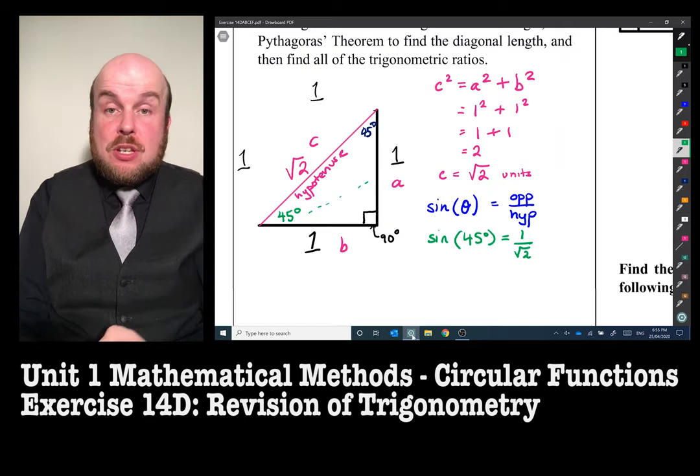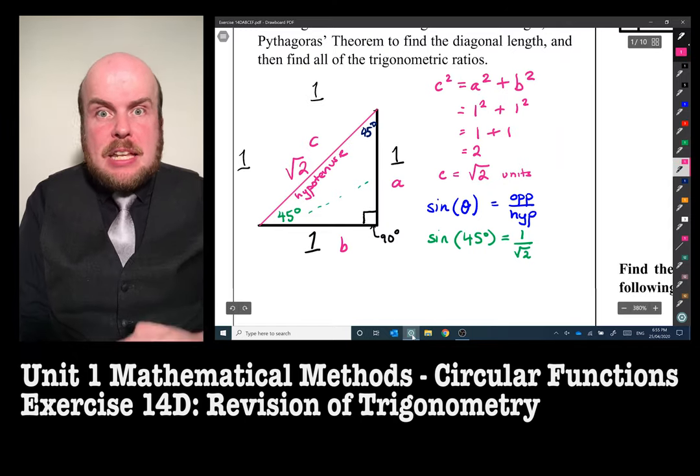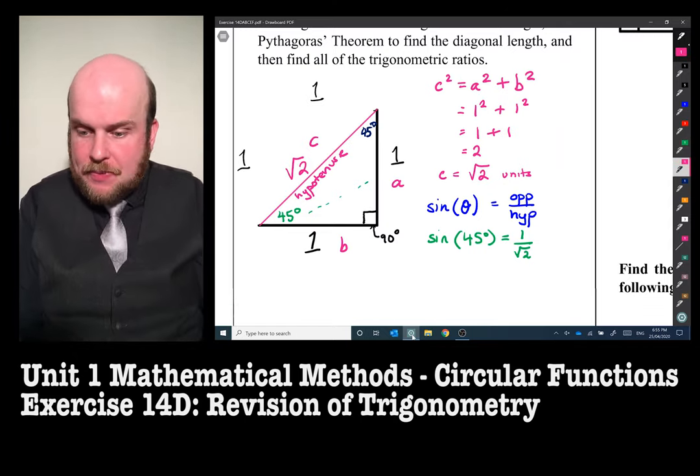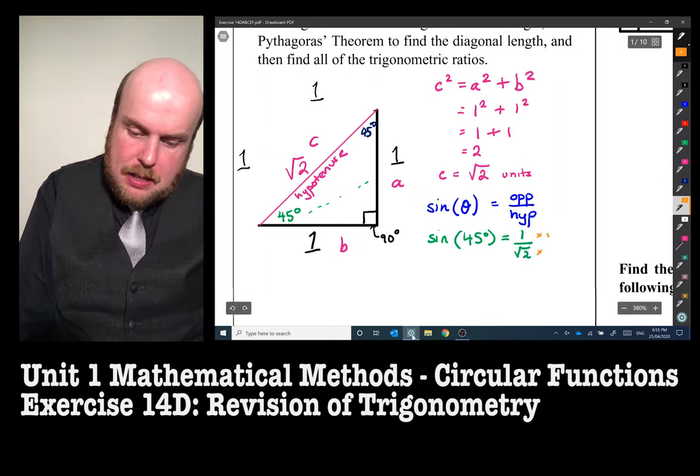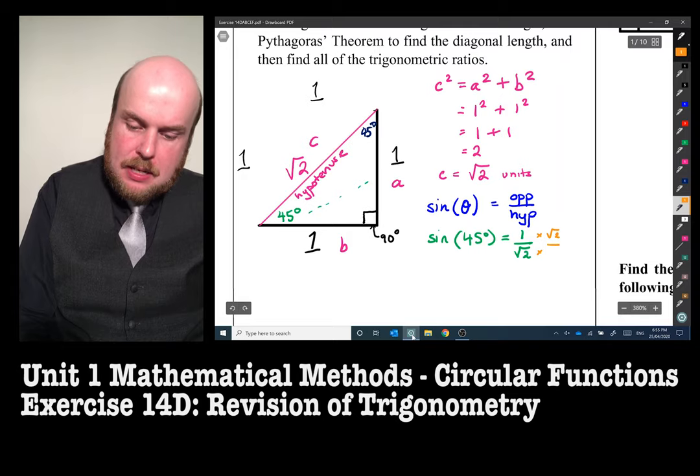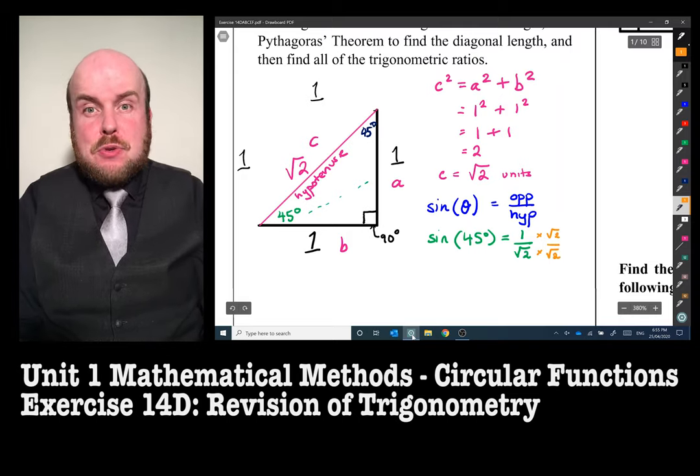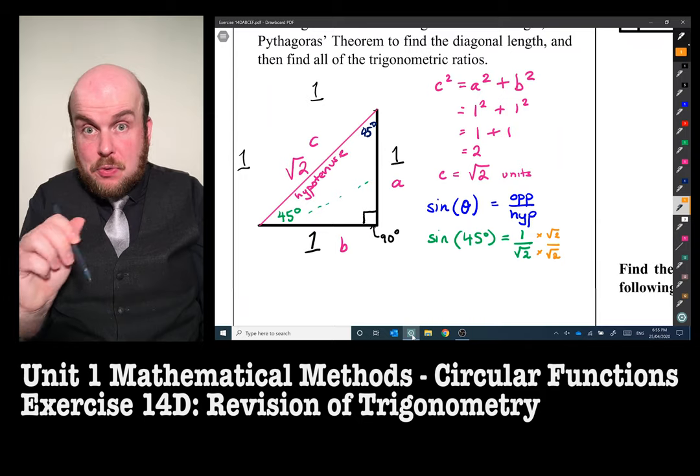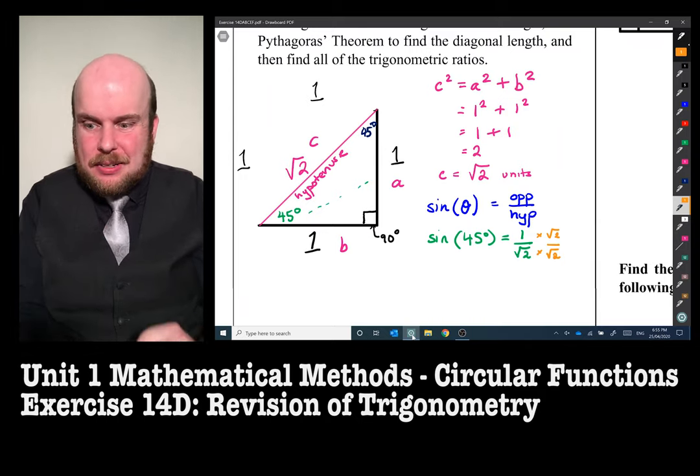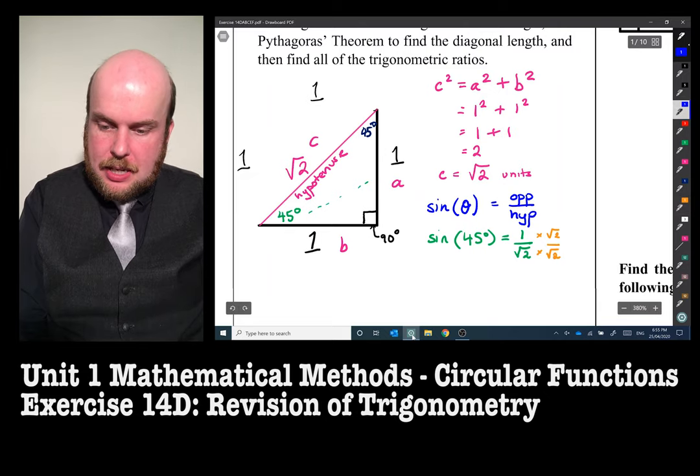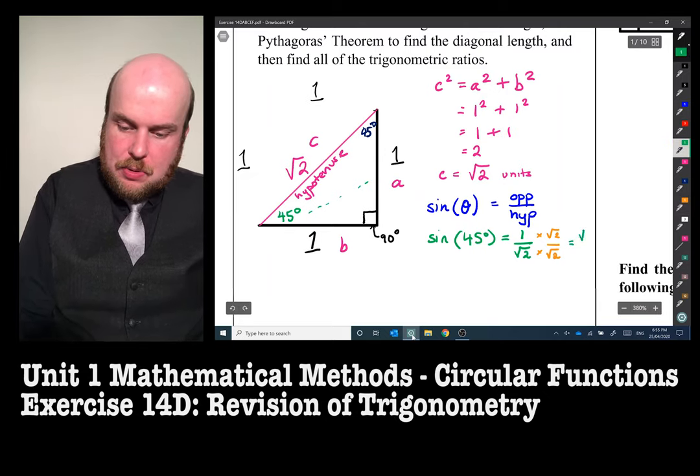So to do that, what they do to rationalize the denominator is they just multiply the top and the bottom by the square root of the bottom. Because technically speaking, if you times something by root two over root two, that's actually just times by one. So it's a little neat trick that we like to do. And that's going to be equal to root two over two.